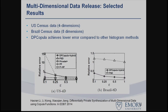Without going into the details of the figures, the takeaway is that DP Copula achieves lower error and better utility compared to other histogram-based, parametric, and nonparametric methods.